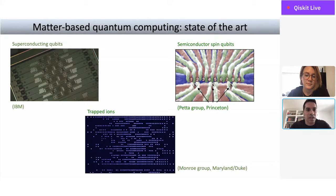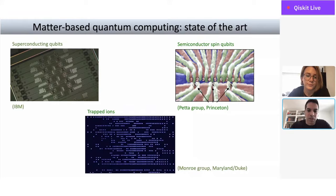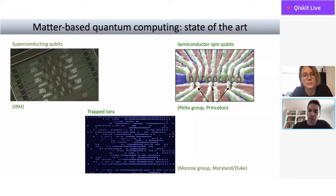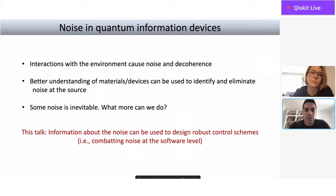The starting point for this work is to look at the state of the art in matter-based quantum computing. Several different types of physical systems have made a lot of progress in the last couple of decades, scaling up to larger numbers of qubits with better control. These include superconducting qubits like those at IBM, semiconductor spin qubits — here's a recent device from the Petta Group at Princeton — and trapped ion quantum computing, from Chris Monroe's group. Each of these systems creates processors containing anywhere from 10 to 100 qubits.